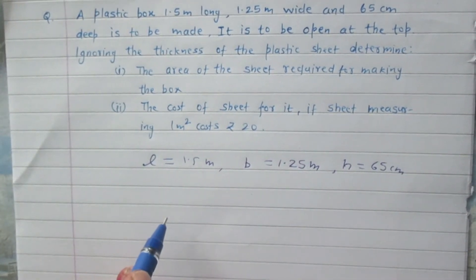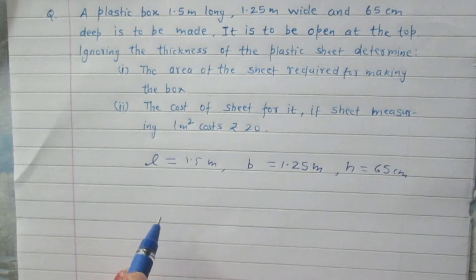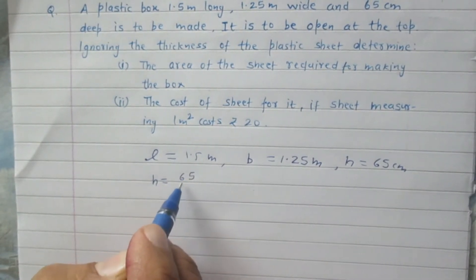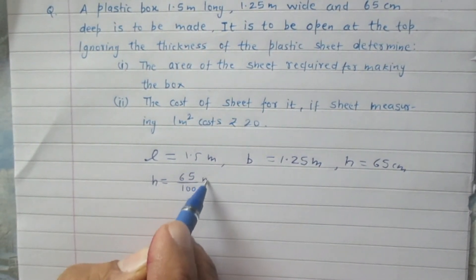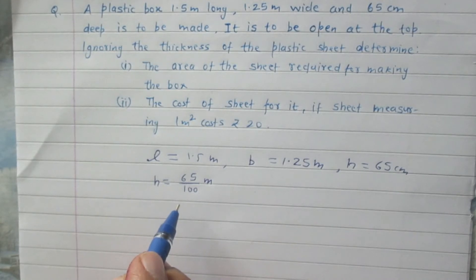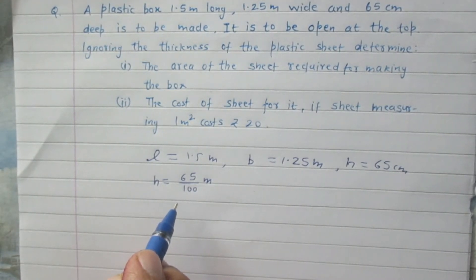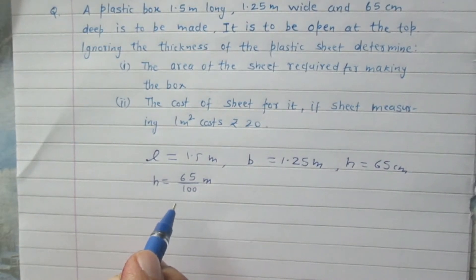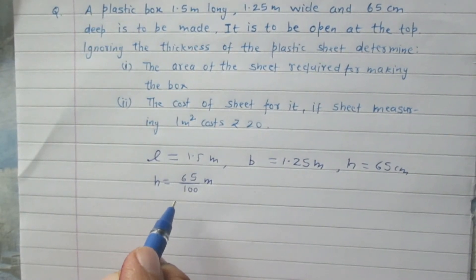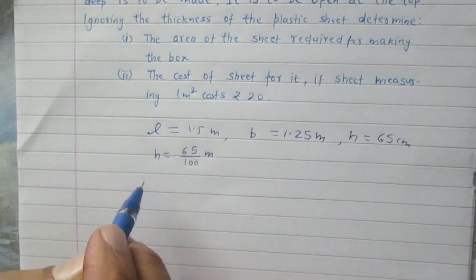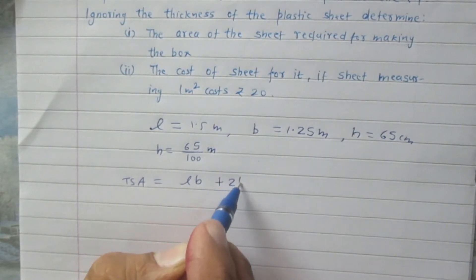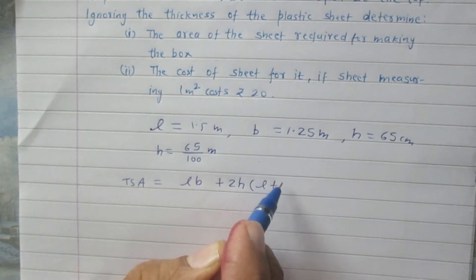The height of the box is 65cm. We can convert cm into m by dividing the value by 100, so the height is 65cm which is 65/100m. We are to find the total surface area of this plastic box which is a cuboid, open at the top. The area of a cuboid without top is: length × breadth + 2h × (length + breadth).